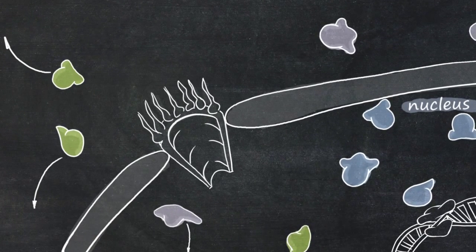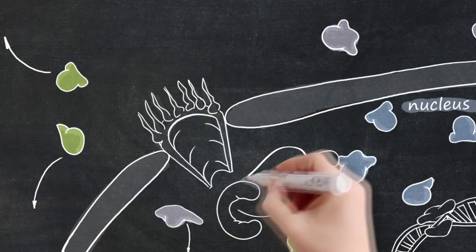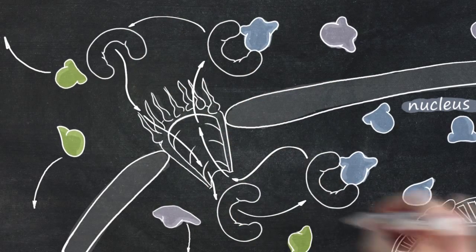XP01 is a critical transporter which shuttles over 200 different proteins from the nucleus to the cytoplasm.